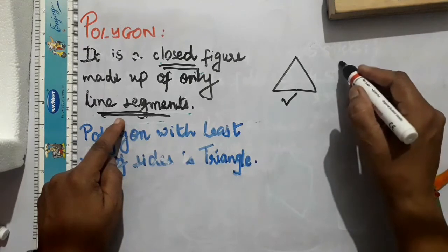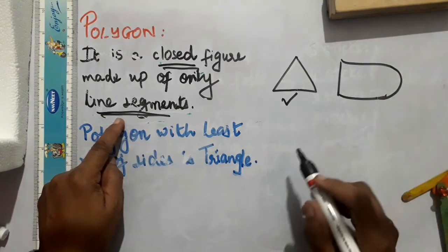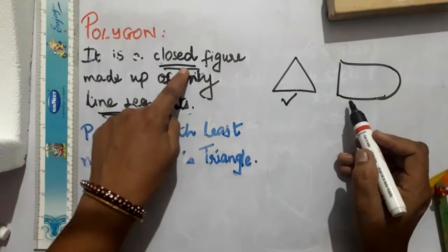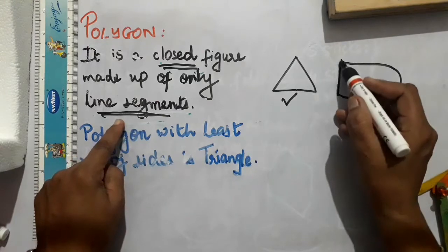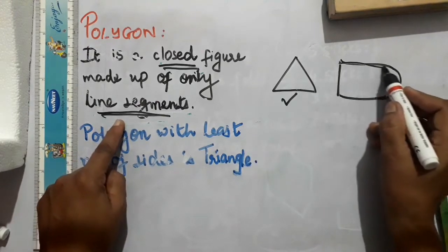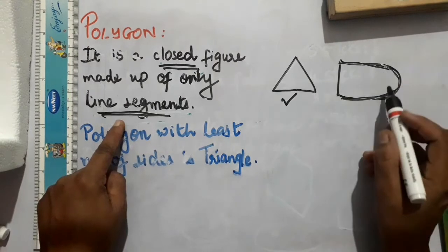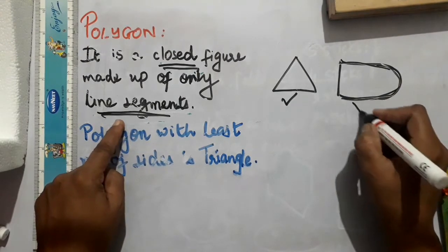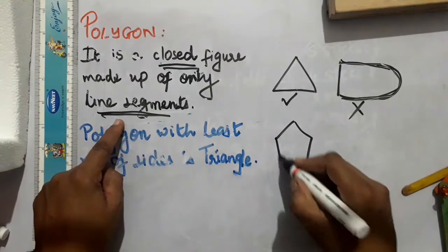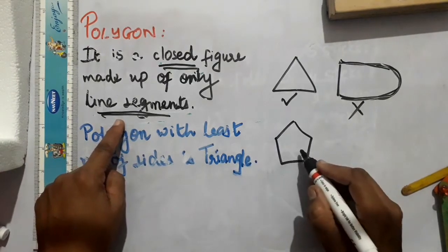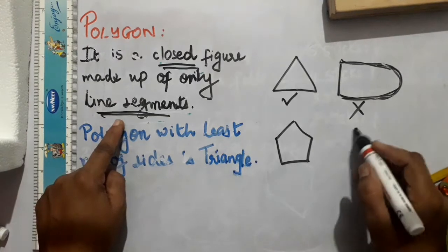If I say — is this a polygon? — here you can say that it is a closed figure, yes. But it is not made up of only line segments. This part is a curve, which is not a line segment. So this is not a polygon. But if you are asked about this figure — it is a closed figure and made up of only line segments, so yes, this is a polygon.